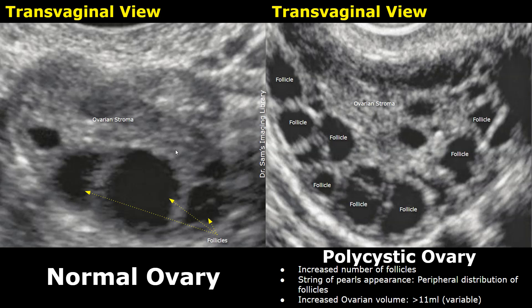The stroma consists mainly of connective tissue, blood vessels, nerves, and cells such as fibroblasts and smooth muscle cells. The image on the right is of a polycystic ovary in a patient diagnosed with polycystic ovarian syndrome.